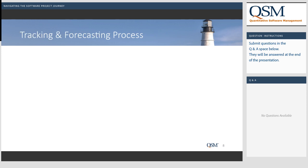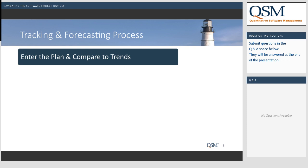The Project Management Institute has well-defined and recommended practices for managing software projects, and QSM has mapped our SLIM tool features to show how we support them. Today I want to focus on a few simple steps that go beyond task, resource, and cost tracking to provide real insight into what's going on. The first step is to enter the plan and compare it to trends — some historical data. You can use the QSM industry database, or a best practice would be to gather your own history and compare your plan to it.